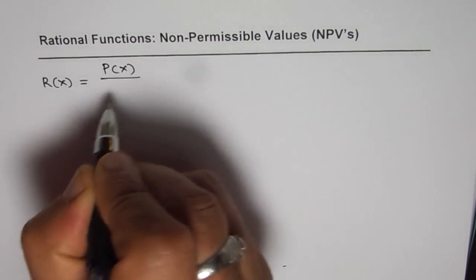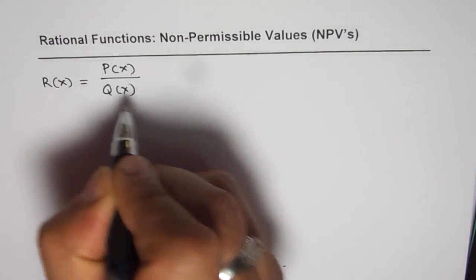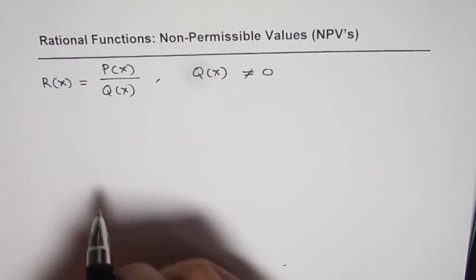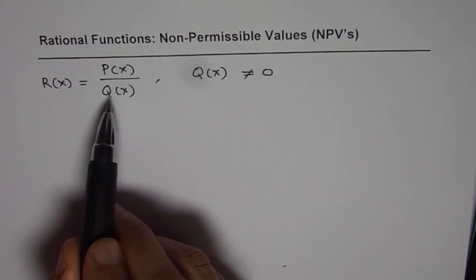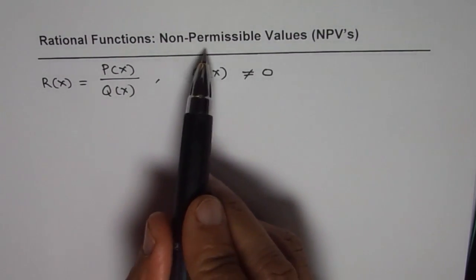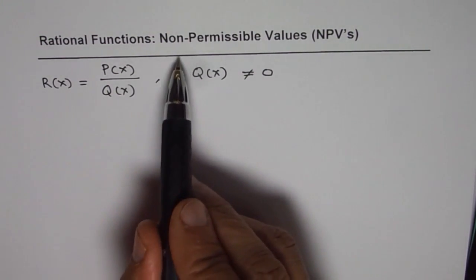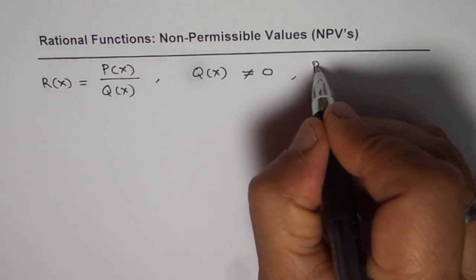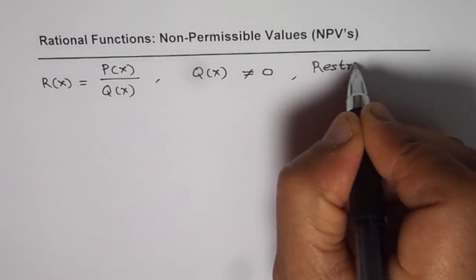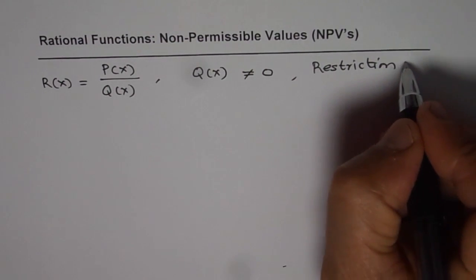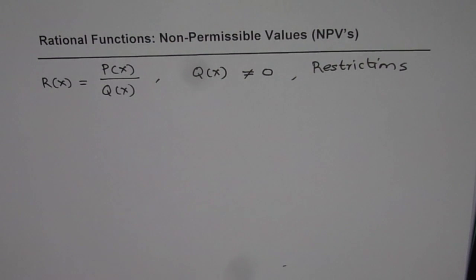That is P(x) divided by Q(x) where Q(x) is not equal to 0. All those values which make the denominator equal to 0 are not permitted and those are what we refer to as NPVs or non-permissible values. The other name for it is restrictions. Since the function can have more than one restriction, always remember that a rational function can have restrictions.